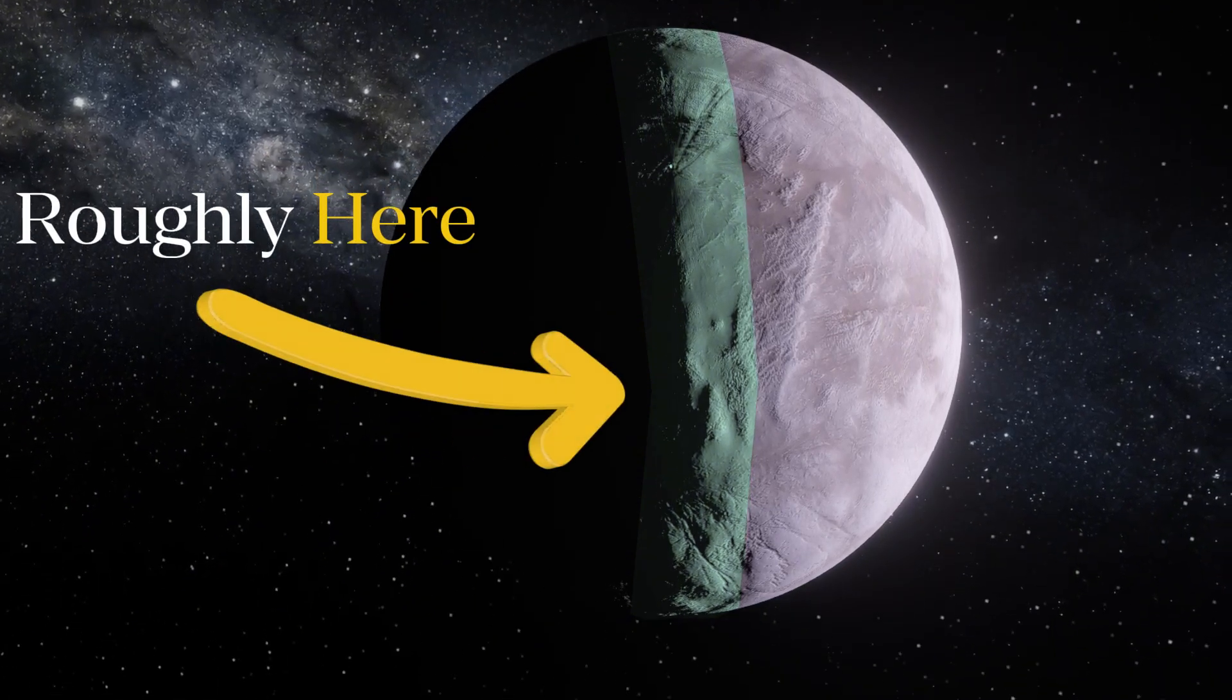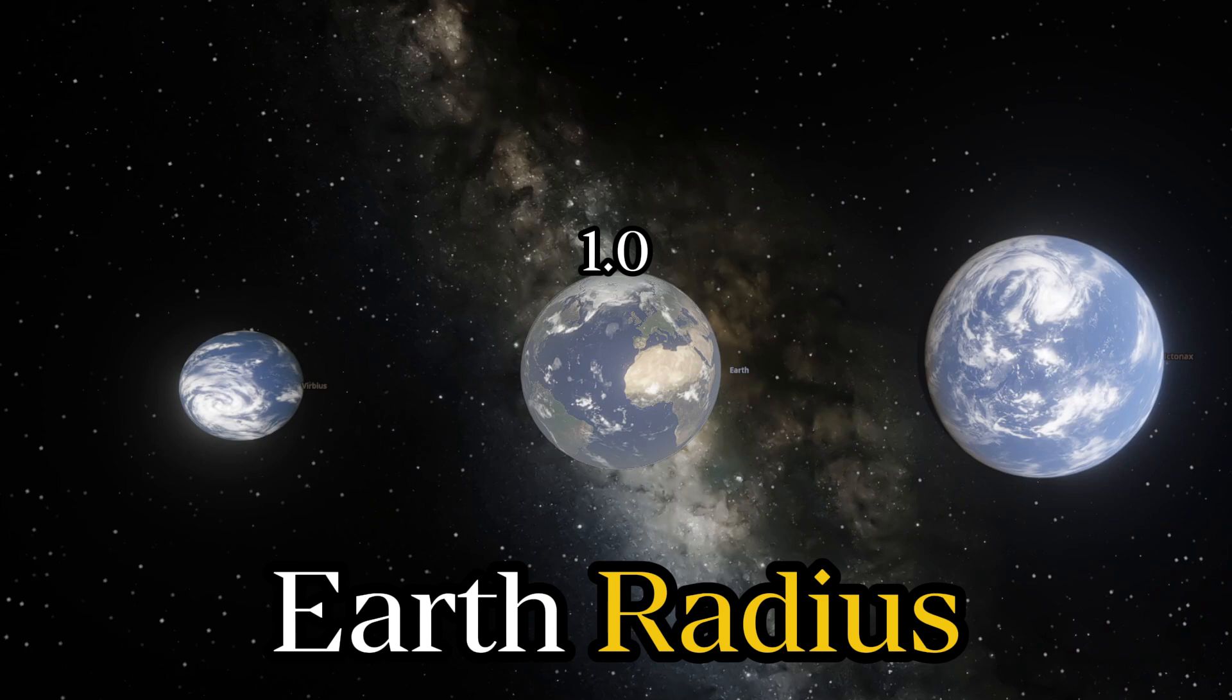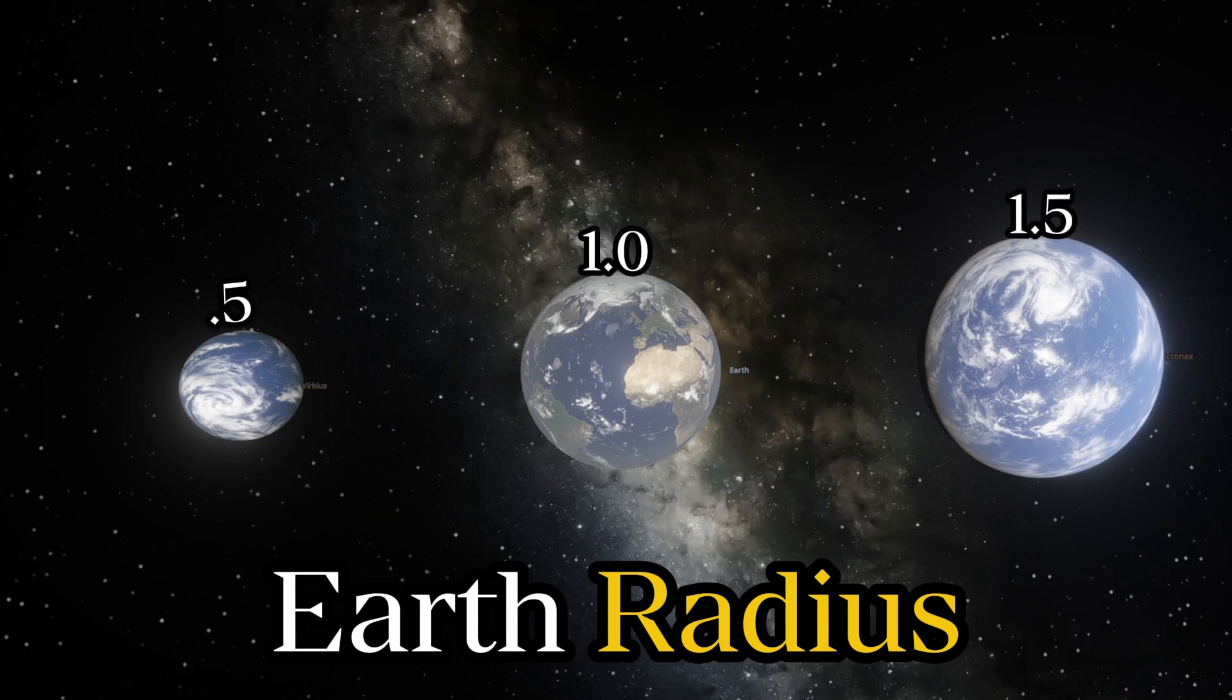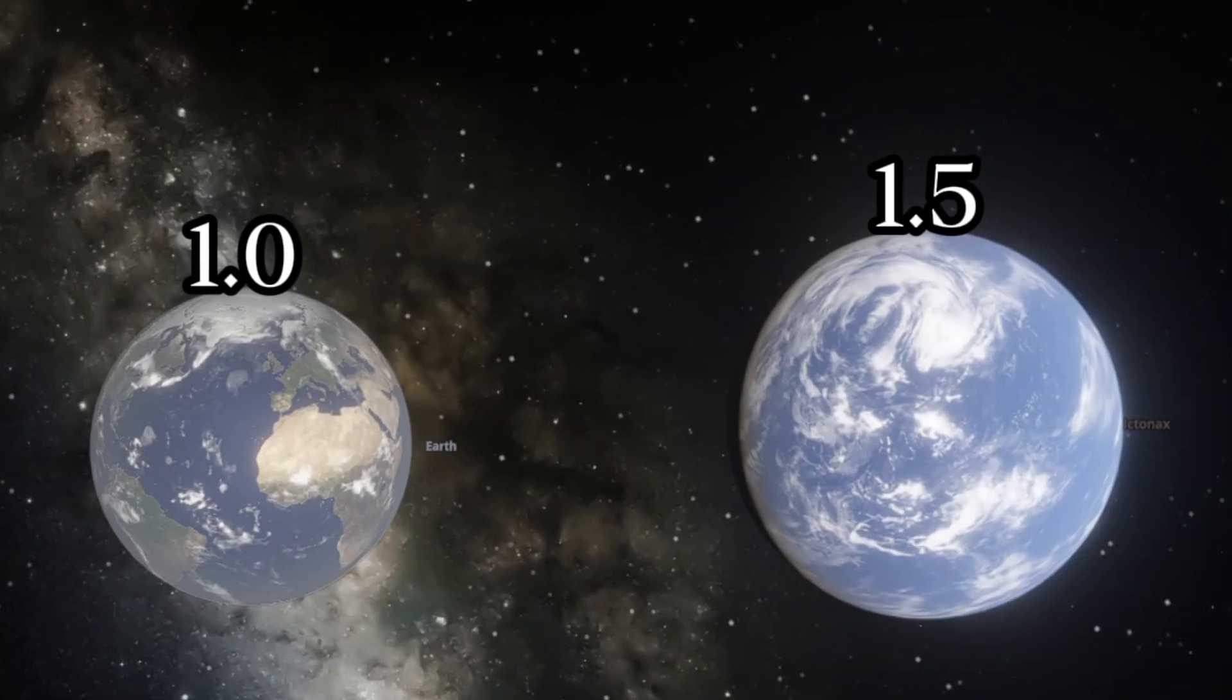Though some models show tidally locked planets could maintain habitable regions. The object's size and mass needs to be within 0.5 and 1.5 Earth masses. Too small and the planet can't retain an atmosphere, kind of like Mars. Too large and it may become a mini-Neptune with a thick gaseous atmosphere.